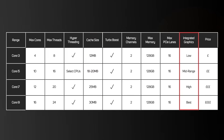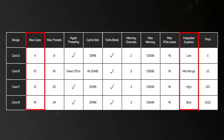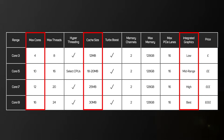The integrated graphics also increases in capability as you go up the range, meaning higher range CPUs will be able to natively cope with more complex and demanding applications, due to the combinations of many cores, higher cache and better graphics capability.